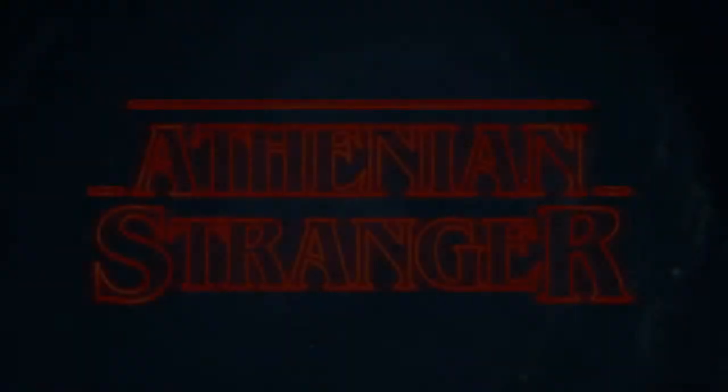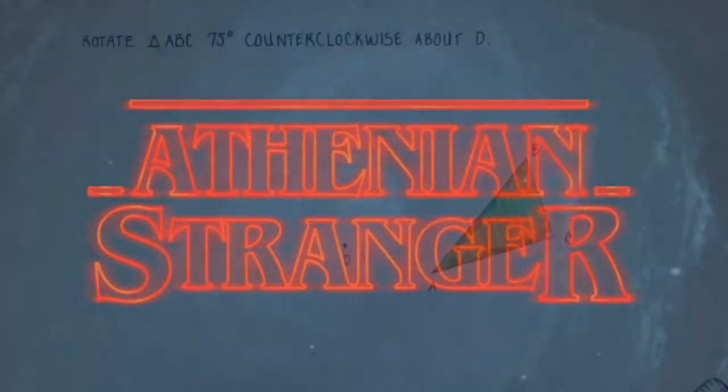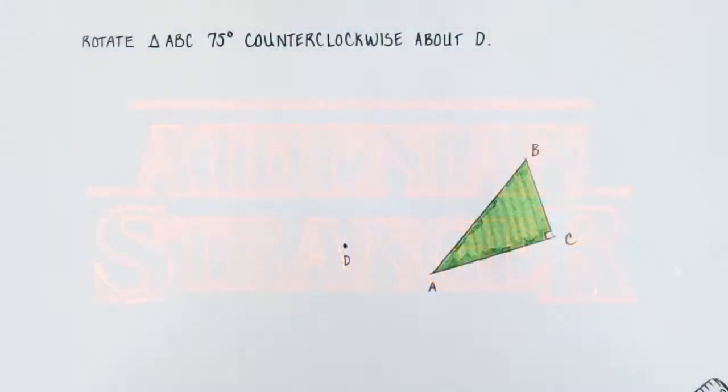All right, ladies and gentlemen, welcome back to this Athenian Stranger tutorial video, where today we are going to learn how to rotate an entire figure about a fixed point. So in this example, we're asked to rotate triangle ABC 75 degrees counterclockwise about point D.